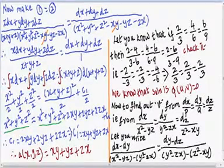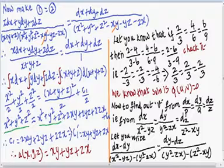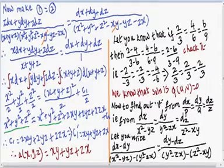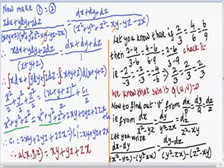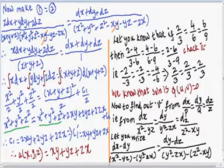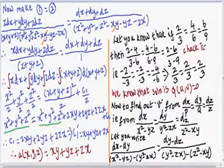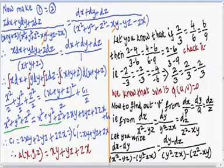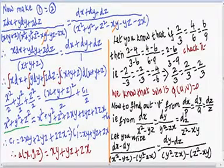Cross-multiplying: x·dx + y·dy + z·dz = (x + y + z)(dx + dy + dz). Note that dx + dy + dz can be written as d(x + y + z). Now taking the integral of all terms: ∫x·dx + ∫y·dy + ∫z·dz = ∫(x + y + z)·d(x + y + z).